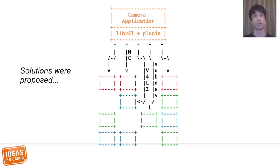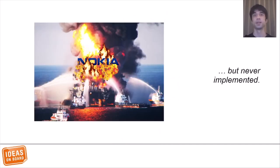At Nokia, they tried to solve the problem with designs based on platform-specific plugins for libv4l, the V4L2 wrapper library. But then in 2011, Nokia decided to cancel its lines of Linux-based phones and switch to Windows Phone. Development of user-space solutions stopped, and after that, Linux had no embedded camera stack, and the situation was never fixed in user space.